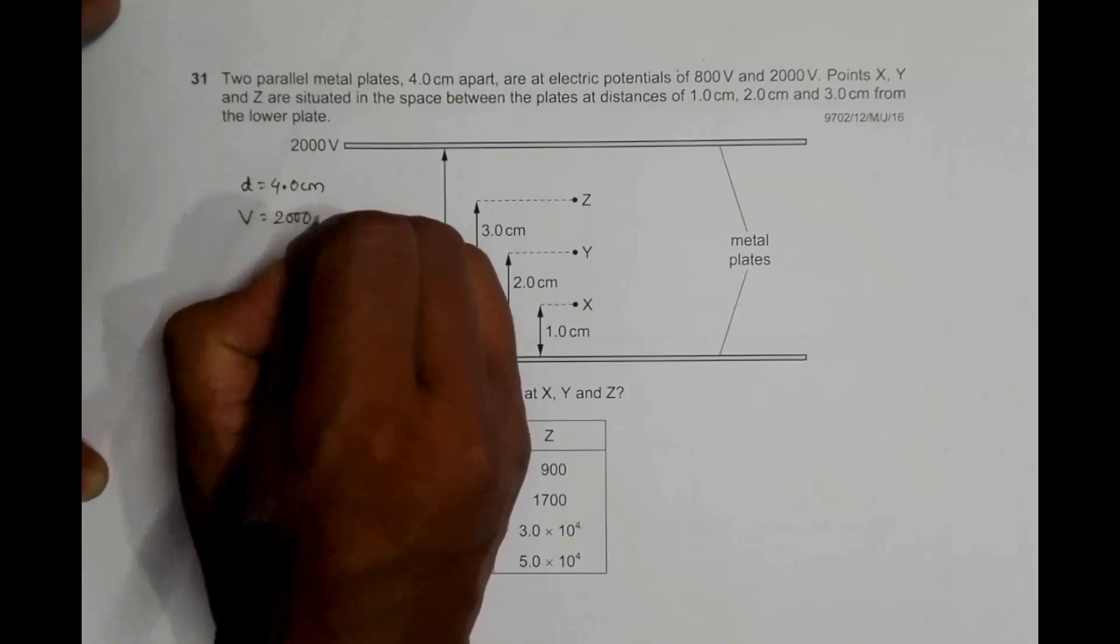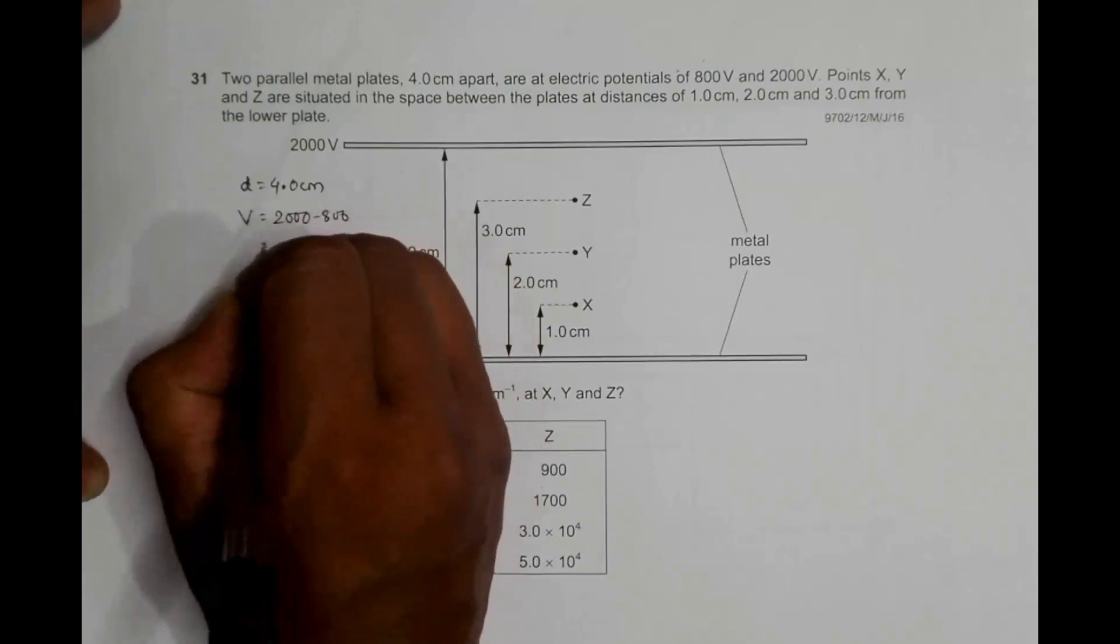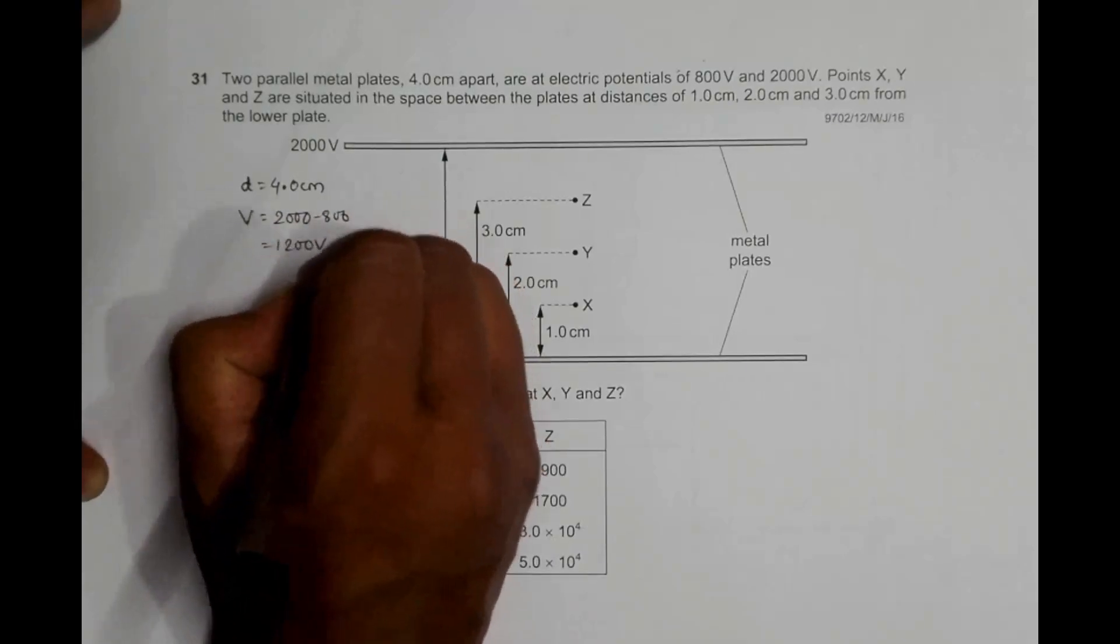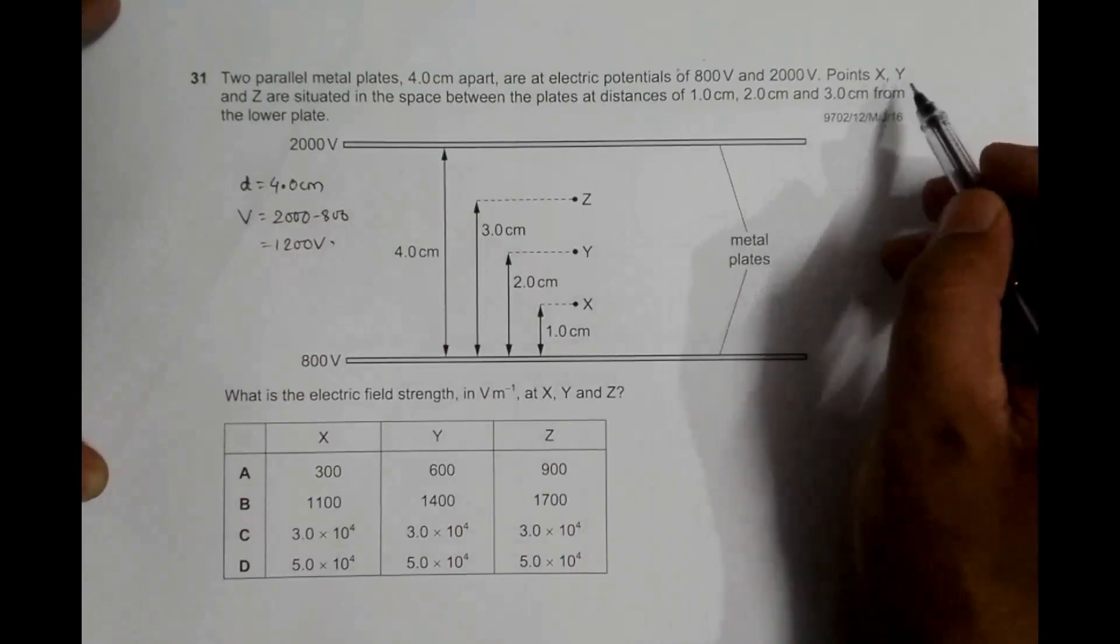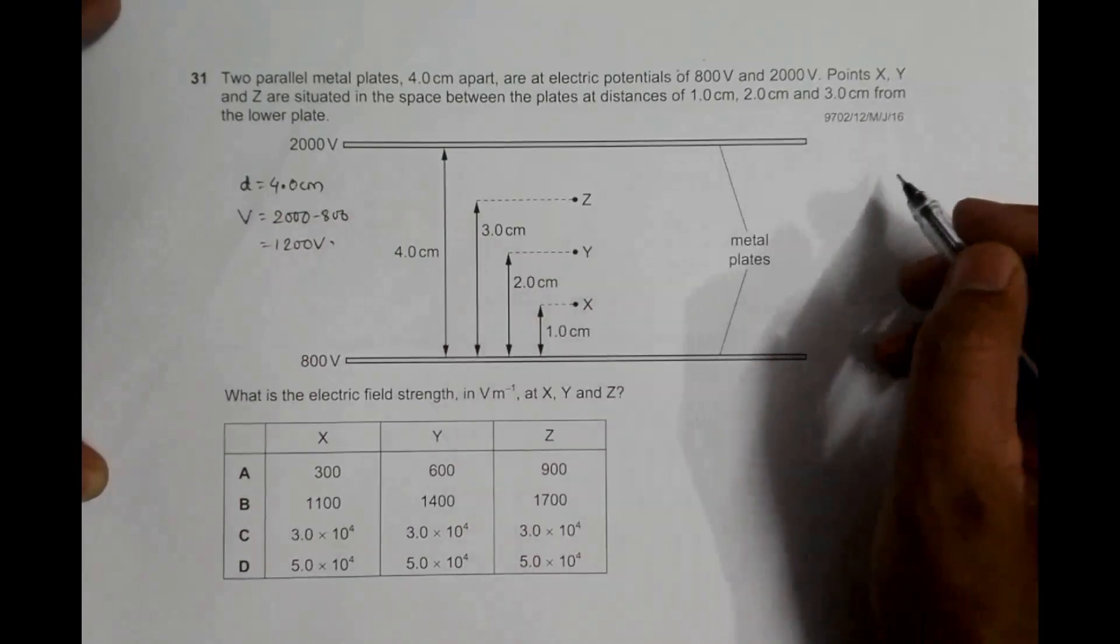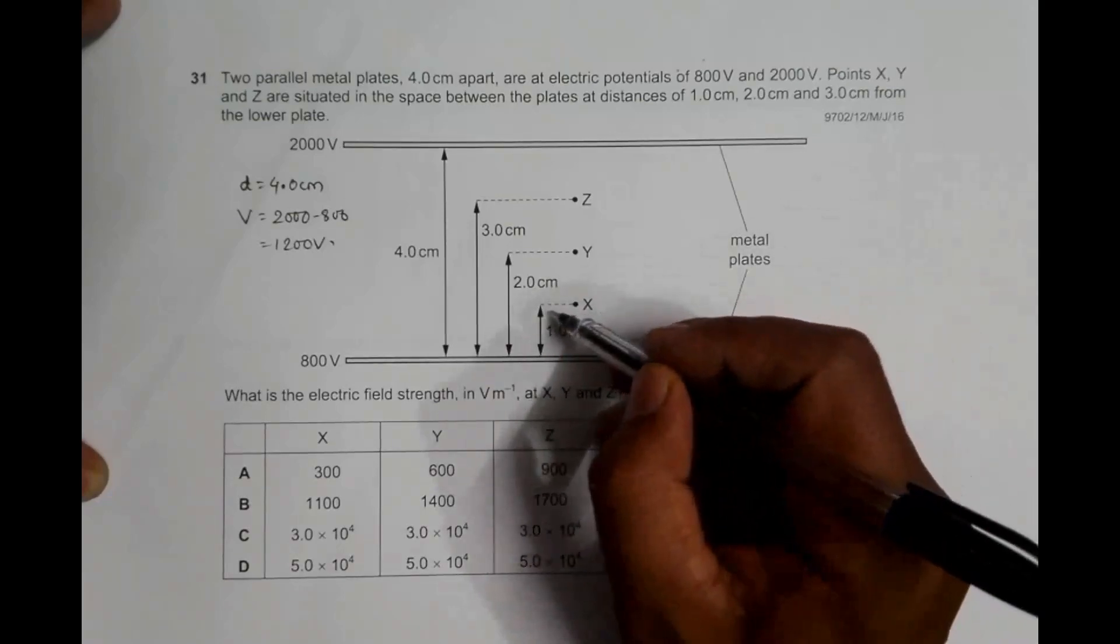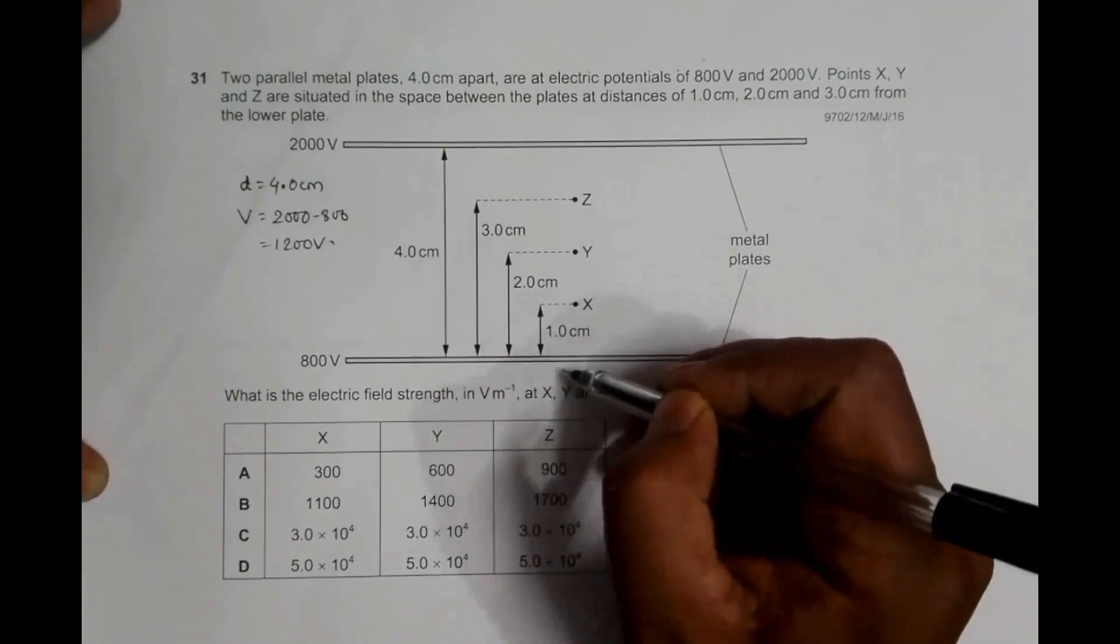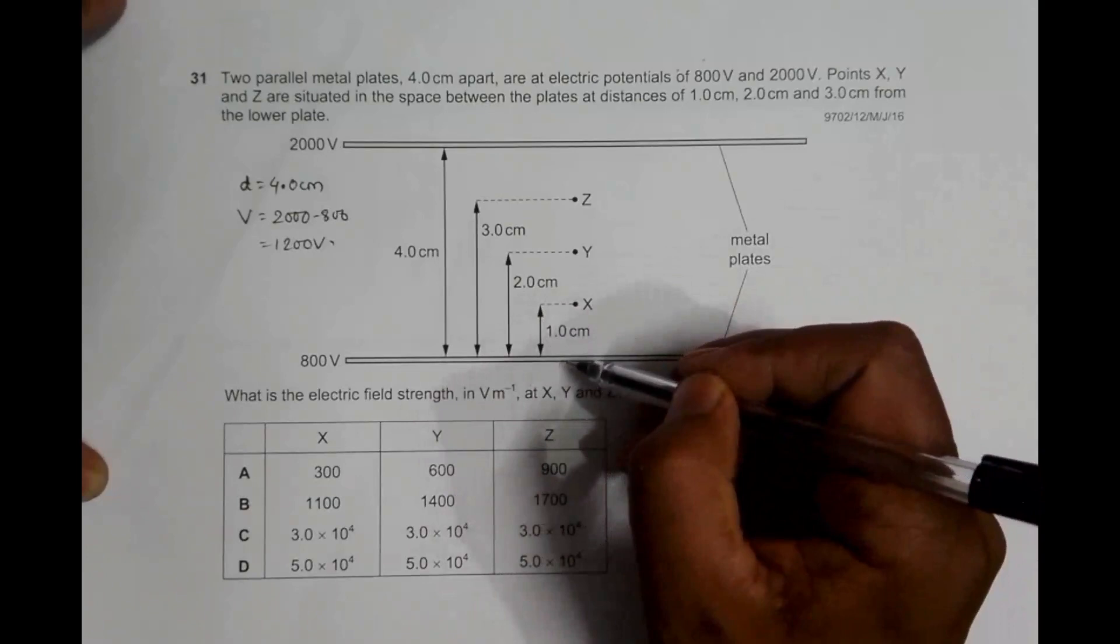So the potential difference between them will be equal to 2000 minus 800, equal to 1200 volts. Points X, Y, and Z are situated in the space between the plates at several distances, actually at 1 centimeter from the 800 volt plate.